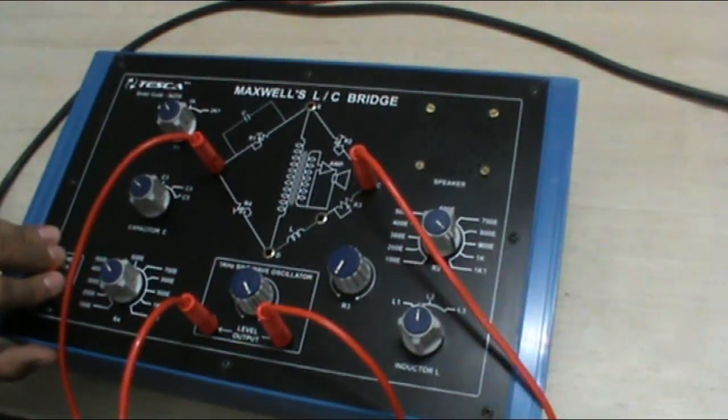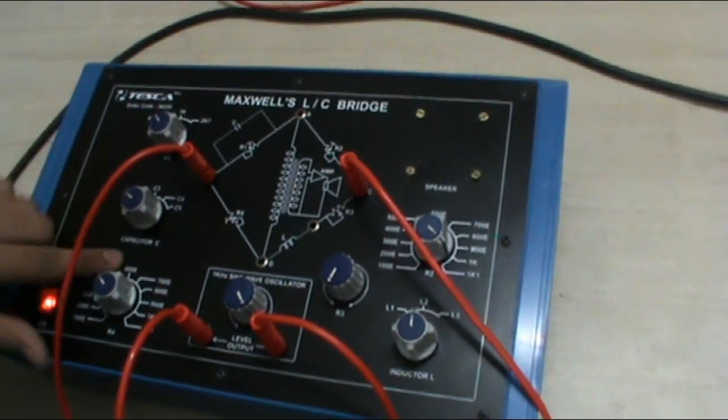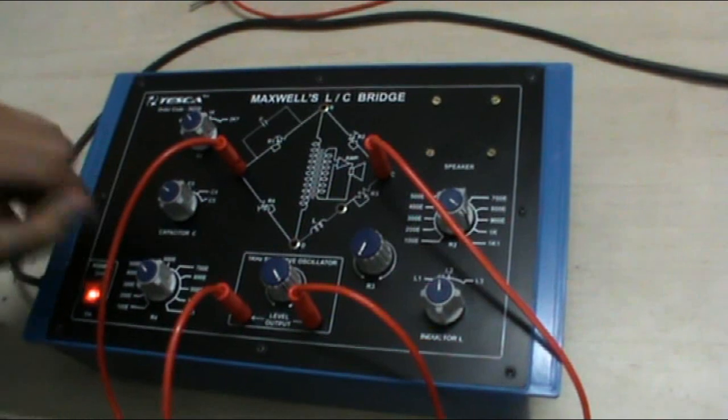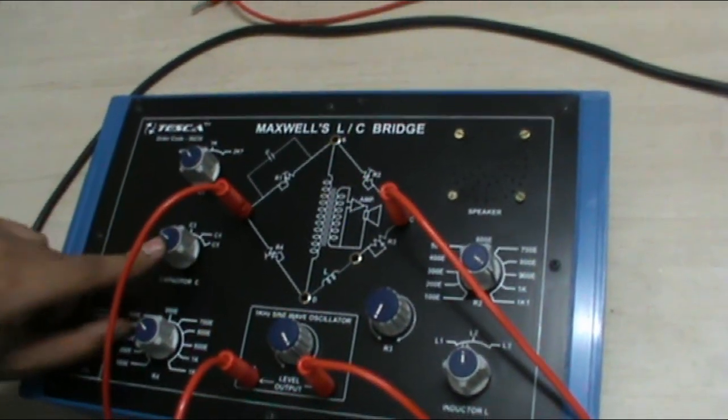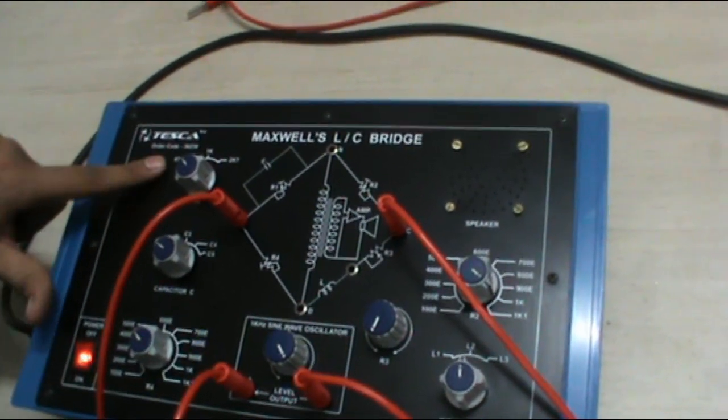Now select any value from the capacitor C knob: C1, C2, C3, C4, C5. We keep it to C2. Select R1 as 470 ohm.